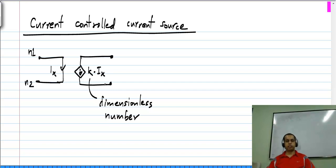You can think of this as the counterpart of the voltage controlled voltage source. A voltage controlled voltage source gives you a scaled voltage, and a current controlled current source gives you a scaled current.